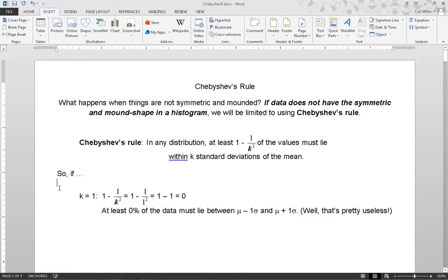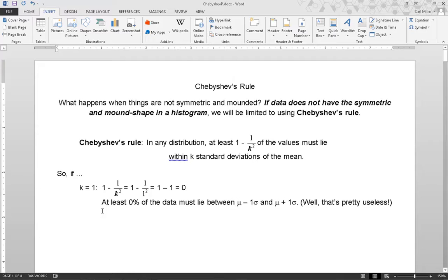So, if k equals 1, 1 minus 1 over k squared equals 1 minus 1 over 1 squared for k equal to 1 equals 1 minus 1 or 0. At least 0% of the data must lie between mu minus 1 sigma and mu plus 1 sigma. Well that's pretty useless. At least 0% of the data must lie within one standard deviation of the mean.